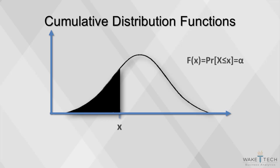The cumulative distribution function, or CDF, is the probability that the variable takes a value less than or equal to x. It's the total area under the normal curve up to x.